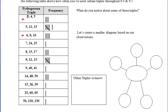6, 8, and 10 — we just took the 3, 4, 5 family and multiplied it by 2. And then 9, 12, and 15 — we took that 3, 4, 5 family and multiplied it by 3. So those are all part of the same Pythagorean triple family.